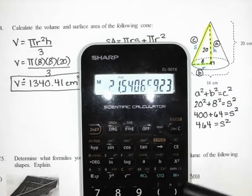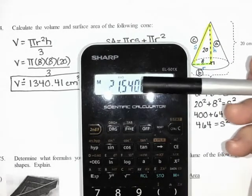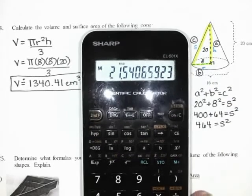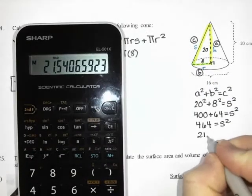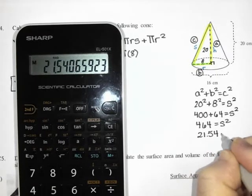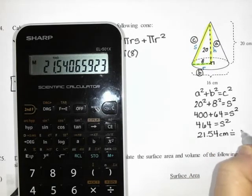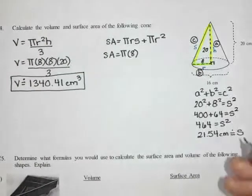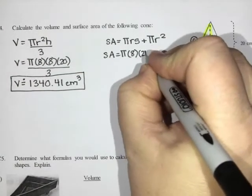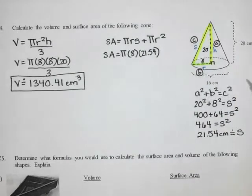I need to square root that. I get 21.54 centimeters. So I'm going to use 21.54 as my slant.